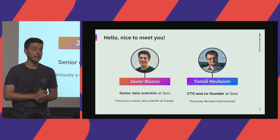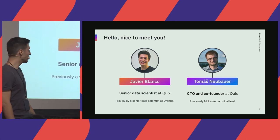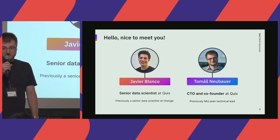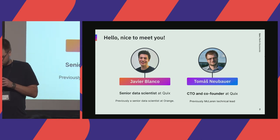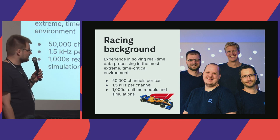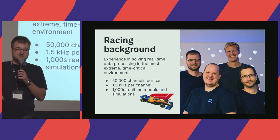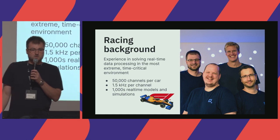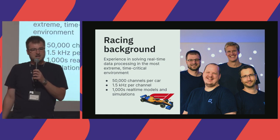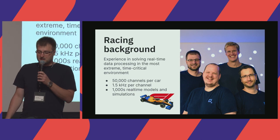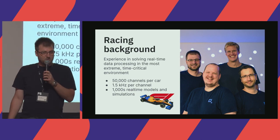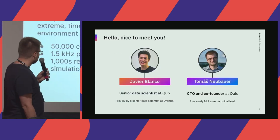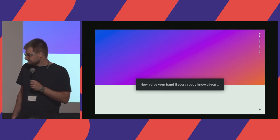I previously worked as senior data scientist at Orange in Spain, a telecom company, and before that at Jaguar Land Rover in the UK. With me today is Thomas Neubauer, CTO and co-founder of Quixx. Thomas previously worked at McLaren, where they were getting data from F1 cars to the cloud so people in the factory could build decision insights in real time. That was quite a challenging use case — 30 million values per car per minute — so no database could handle that. That's how they ended up using streaming technologies like Kafka and Kubernetes, but those technologies were quite difficult for data teams, and that's how the idea of Quixx started to grow.